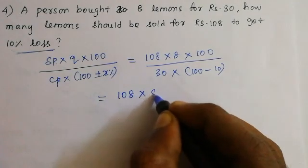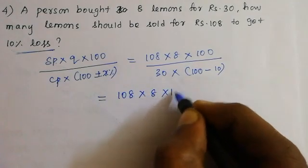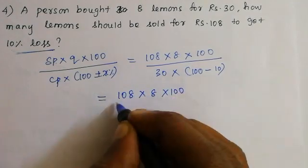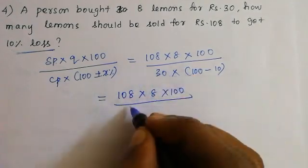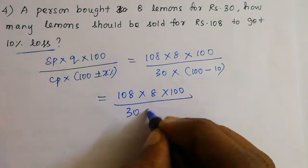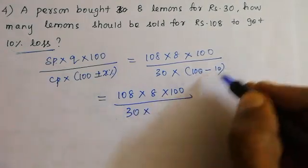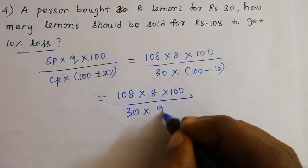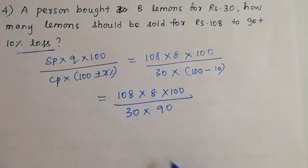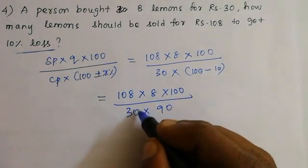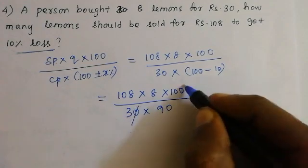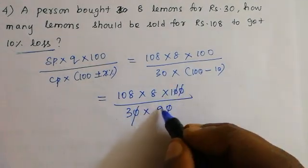108 into 100 divided by 30 into (100 minus 10), which is 90. The zeros cancel and we solve.